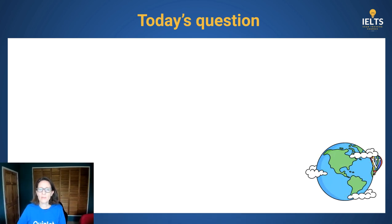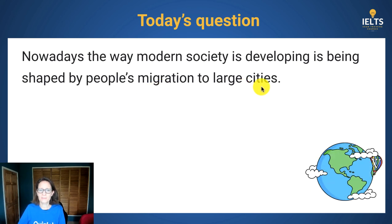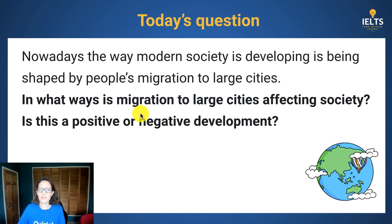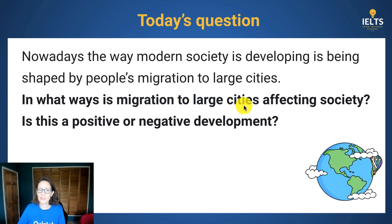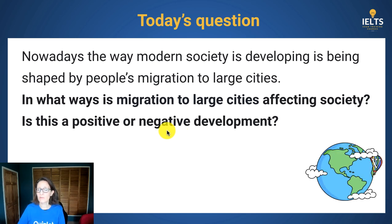The question I'm looking at today is all about migration to large cities. It's the most difficult type of question we talked about — it's got two parts. It's asking you to describe how migration has affected or is affecting society, and then say if it is a positive or negative development. Pause the video and write a few sentences or plan your essay if you want.